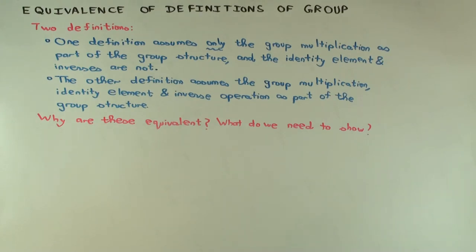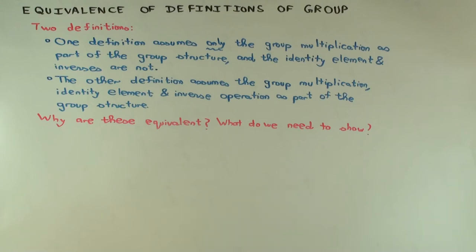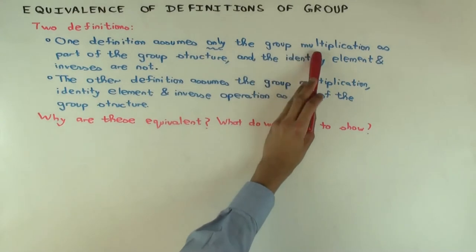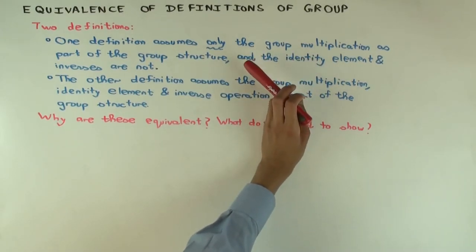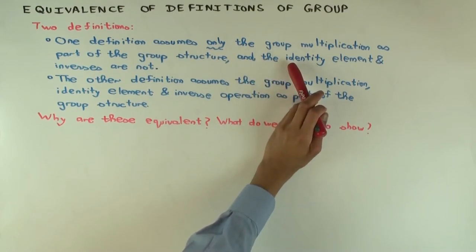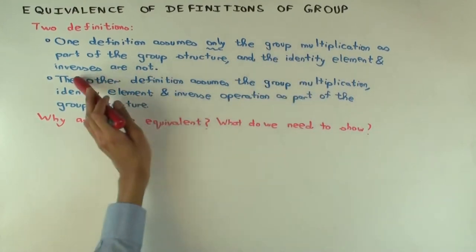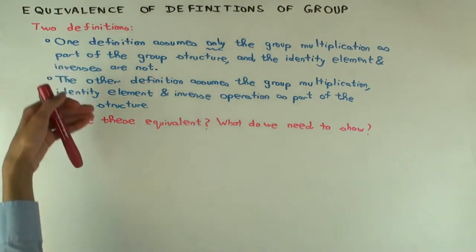I want to claim that these two definitions are actually equivalent. What would I need to show in order to say that there's no information-theoretic difference between these two definitions? You have to show that the identity element and inverse operation, defined as part of the group structure in the second definition, are equivalent. What you want to do is start with the first definition and say: according to the first definition, an identity element and inverse operation do exist — we just don't know if they're uniquely determined by the group multiplication.